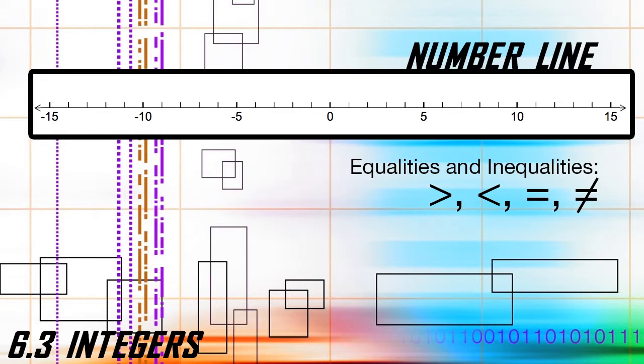When comparing integers, we use the following signs: greater than, less than, equal to, and sometimes not equal to.